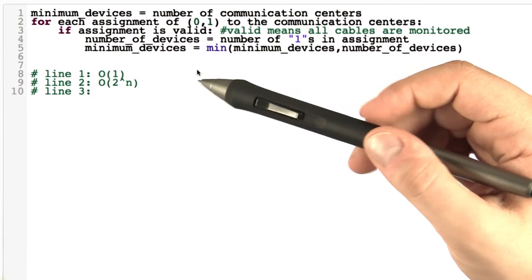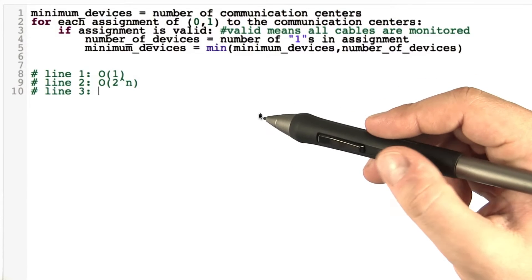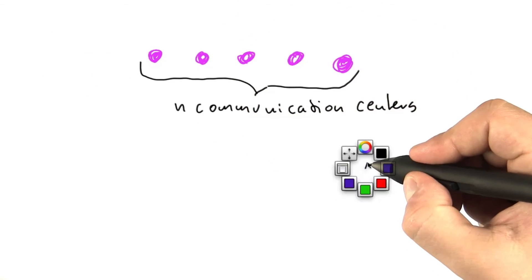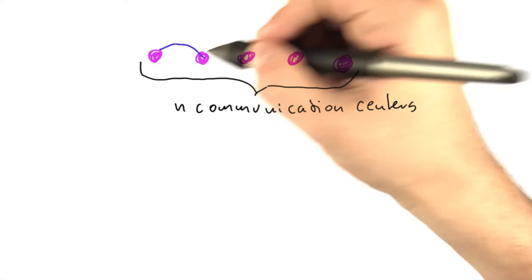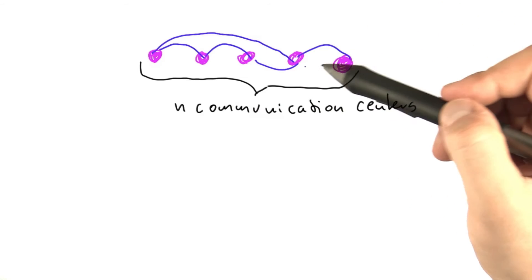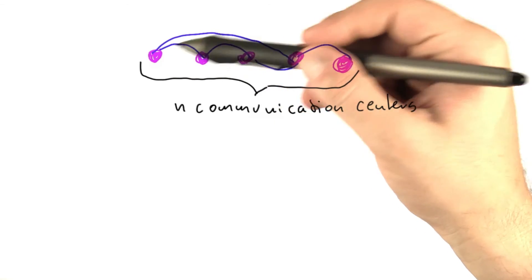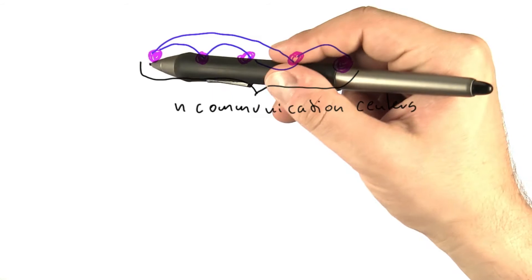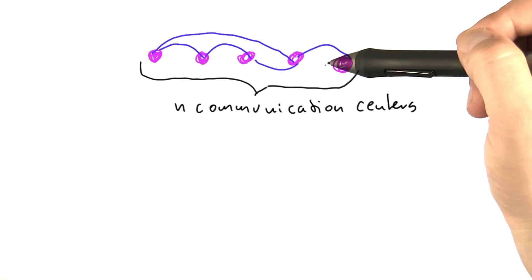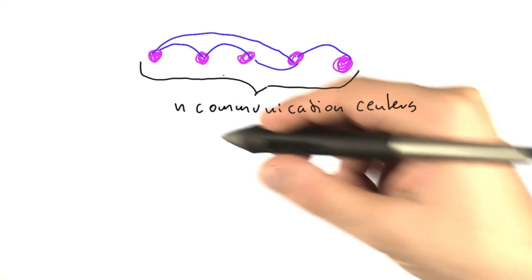So if you have a network that has n communication centers, then in theory each communication center can be connected to any other communication center. So you have n communication centers, and the question is how many connections can they have between each other? So this one could be connected to this one, this one here, this one here, and so on. And basically checking if an assignment of 0 and 1 values is valid means checking for each cable between two communication centers whether at least one of the communication centers is assigned a 1. So the running time of checking if the whole assignment of 0 and 1 values is valid depends on the total number of cables.